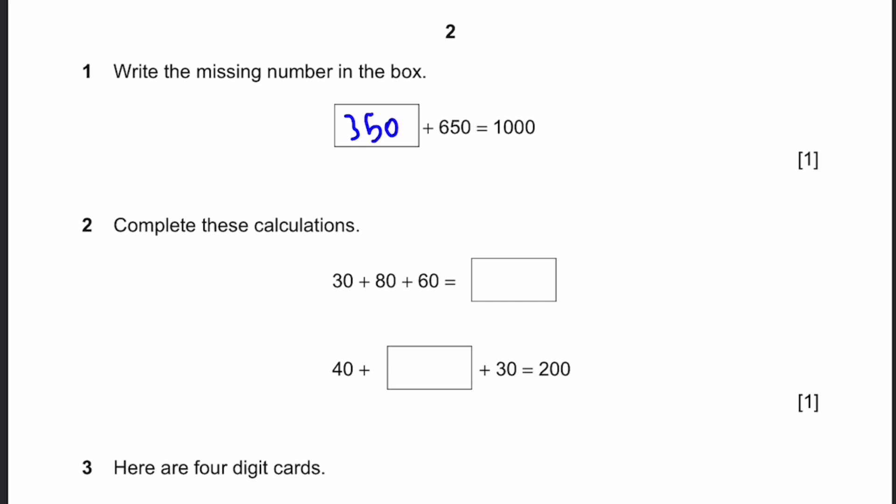Question 2. Complete the calculations. 30 plus 80 plus 60 is equal to 170. 40 plus dash plus 30 equals 200. Bring both of them to the other side, we get 200 minus 40 minus 30, 130. That's the answer.